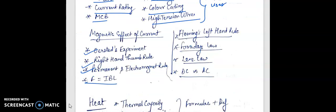In this portion, Fleming's left hand rule, Faraday's law, Lenz's law and its definition. Direct current versus alternating current - the proper difference with three points. In case it is a three marker, you have to present all these three points. Right hand thumb rule, permanent and electromagnet. The formula of force, that is I·B·L.